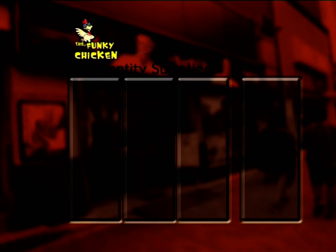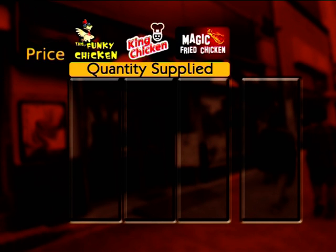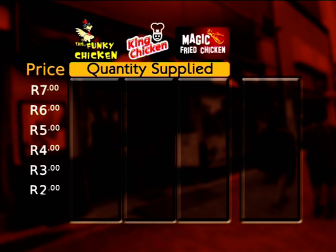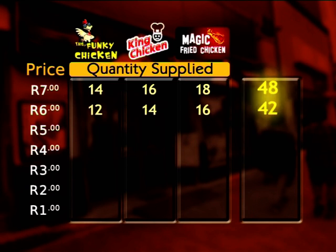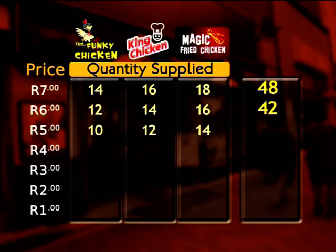In the same way we derive market demand, to get the market supply curve, we simply add all the individual suppliers together. From this, we can derive our market supply table. The amounts produced at the various prices by each supplier are added together to give us the quantity supplied by the whole market.